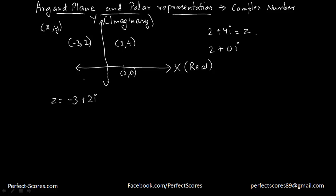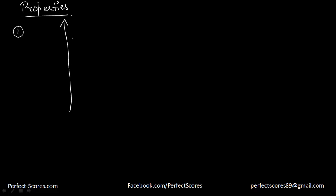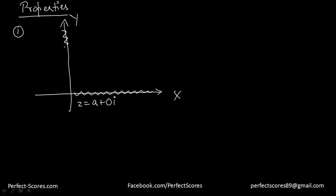There are a few specific properties of the Argand plane. The first property is that every point on the x-axis represents a complex number of the form a + 0i, because the imaginary part is 0. Every point on the y-axis represents a complex number of the form 0 + bi, because the real part is 0.